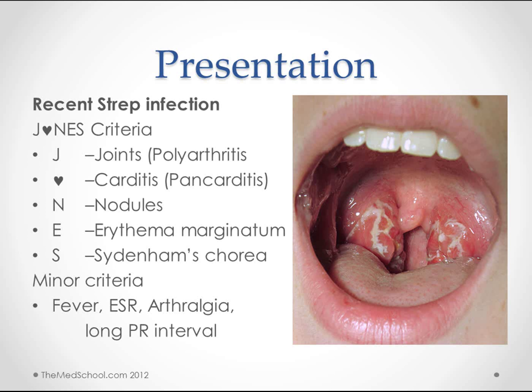The N is for nodules — you get these subcutaneous nodules. The E is for erythema marginatum. And the S is for Sydenham's chorea, which is a dance-like choreiform disease.